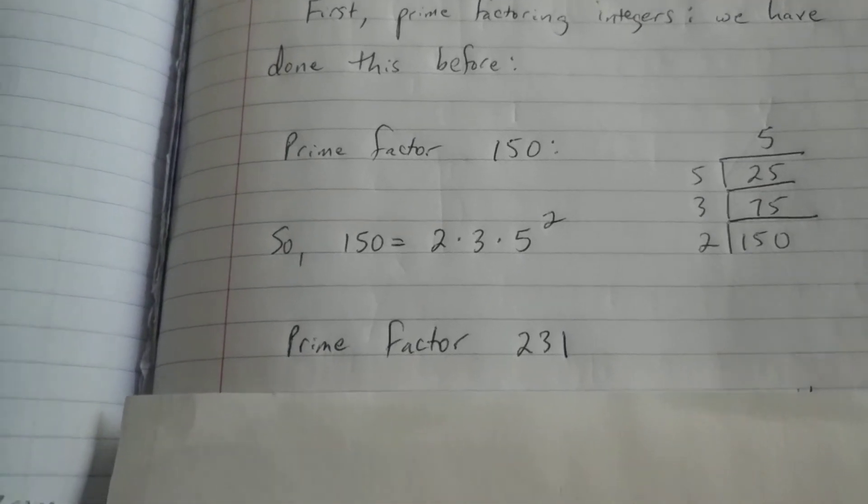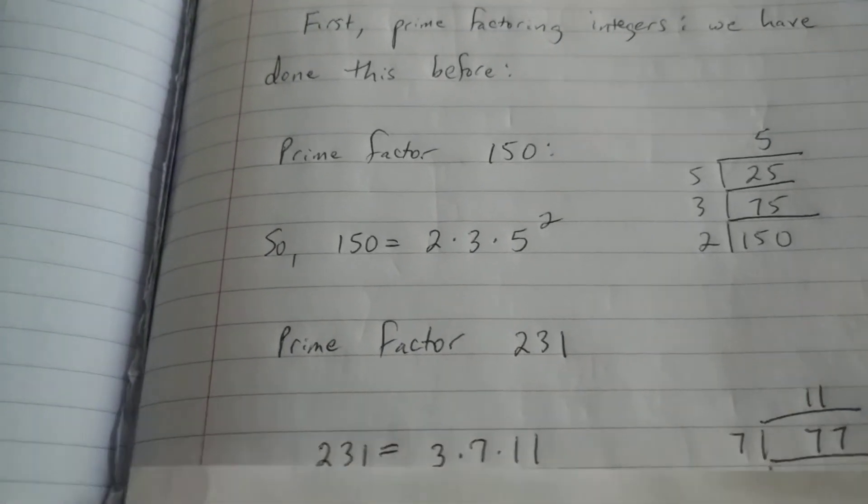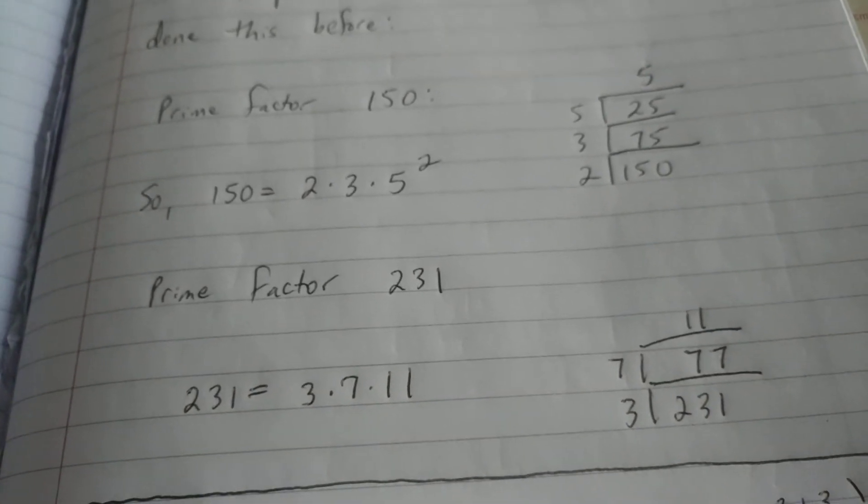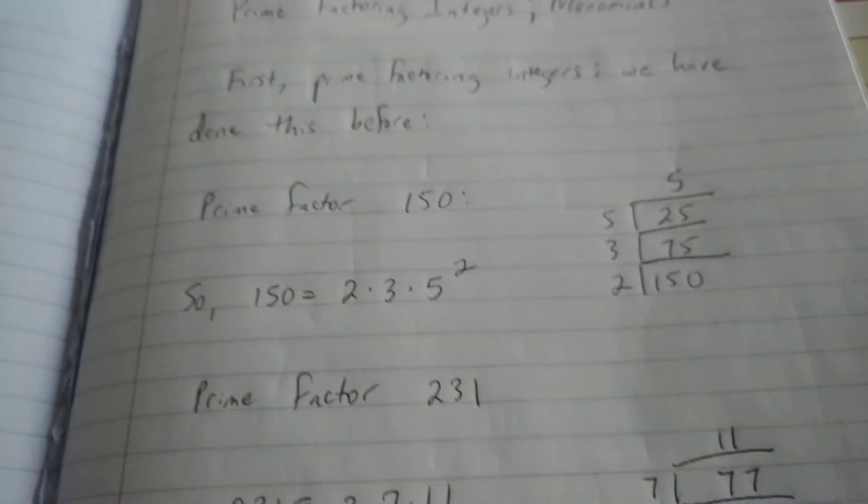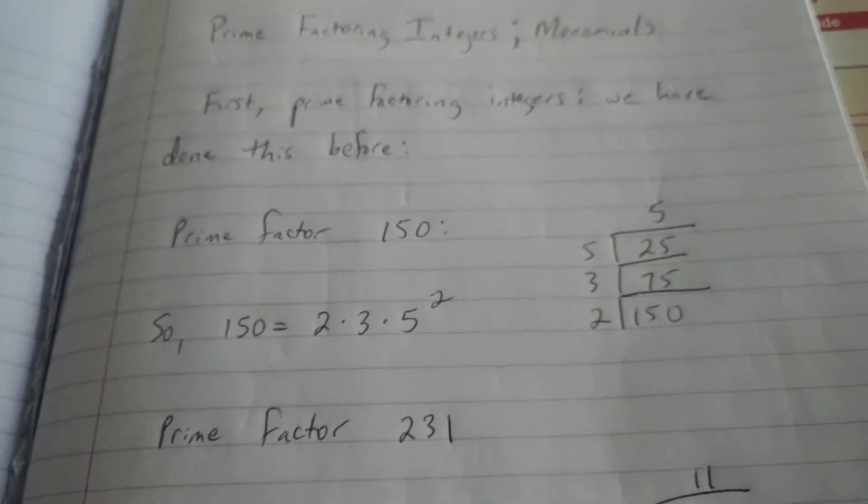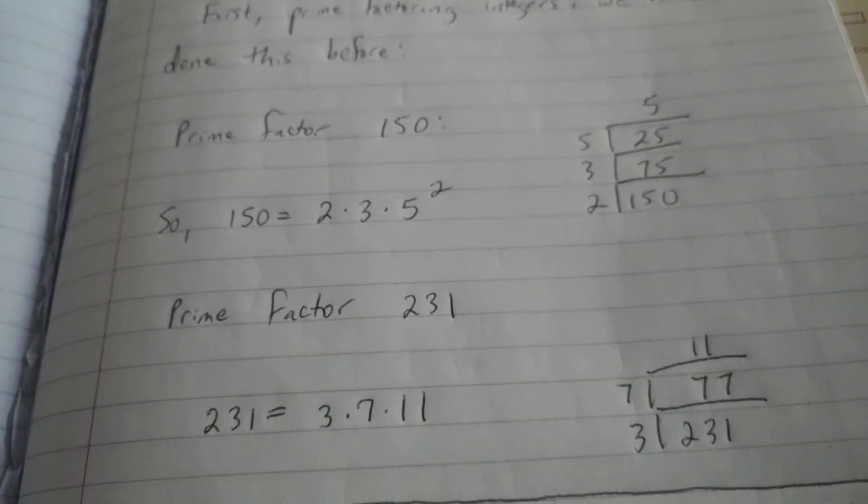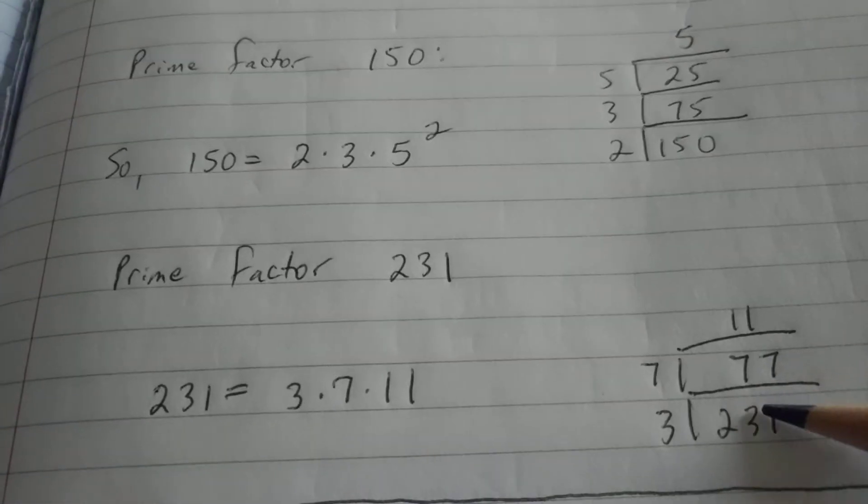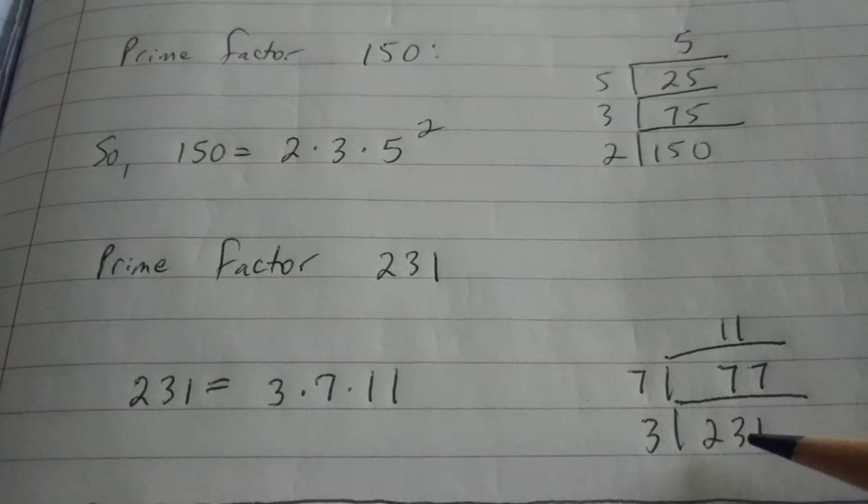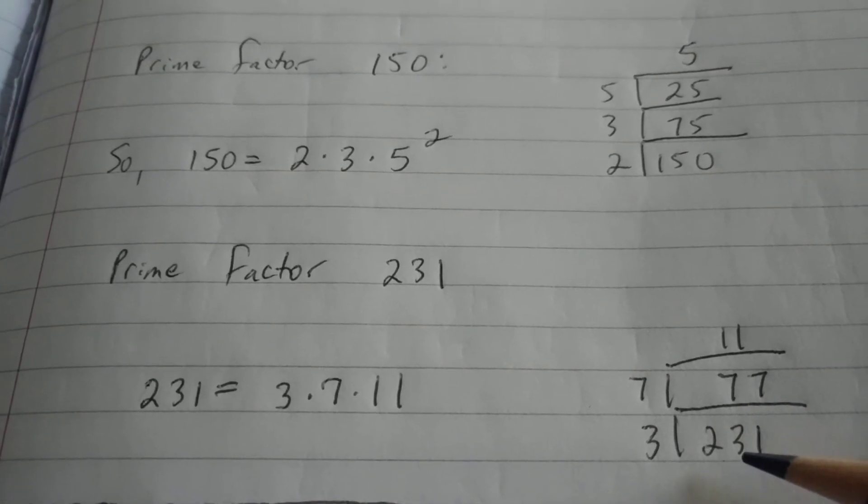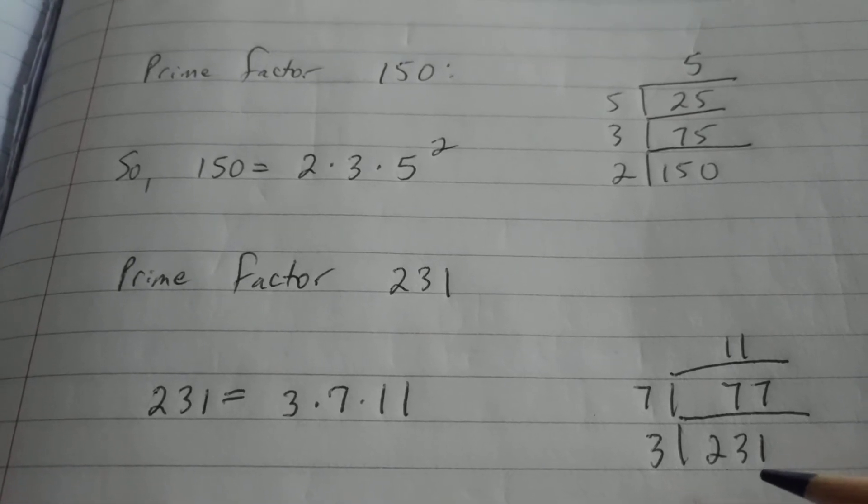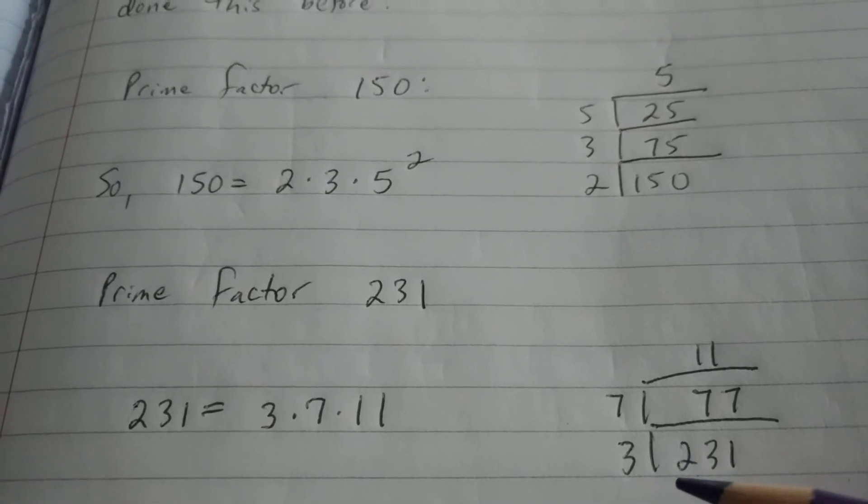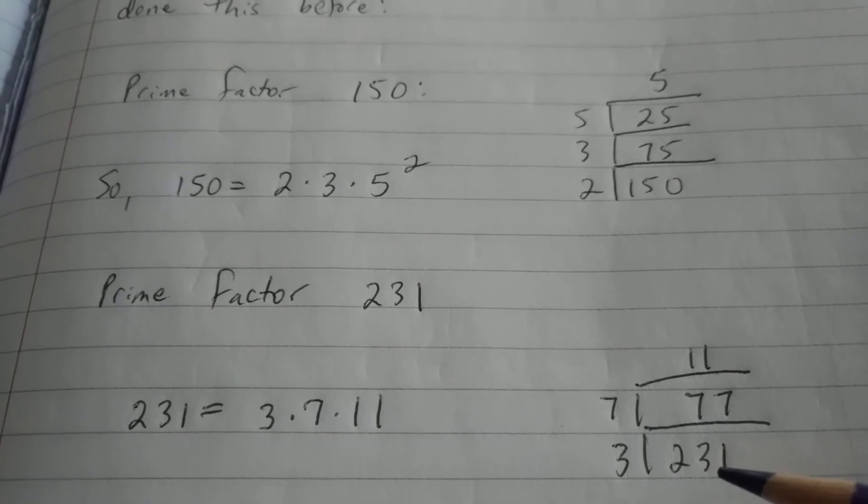Now we'll prime factor the number 231, doing the same kind of thing. We notice here that 231 is not even. However, 2 plus 3 is 5, 5 plus 1 is 6, so 3 divides 6, so 3 will divide 231.